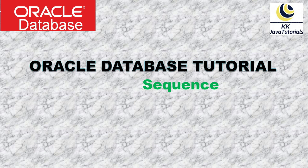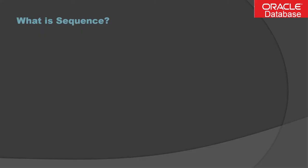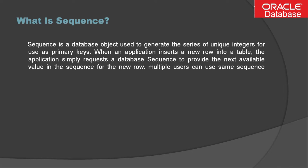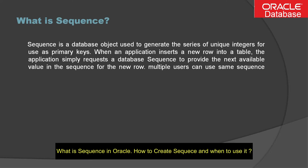Welcome to KK Java Tutorials. In this video tutorial, I am going to talk about sequences in Oracle. A sequence is a database object used to generate a series of unique integers for use as primary keys. When an application inserts a new row into a table, it simply requests the database sequence to provide the next available value for the new row.